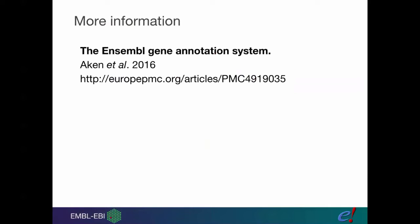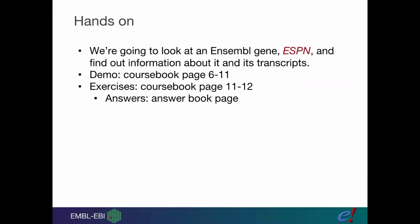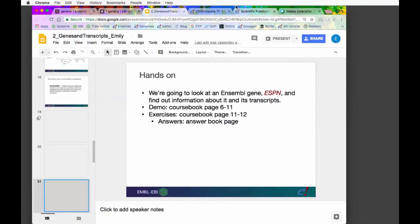We have a lot more information about the gene annotation system in our paper. The slides link to this, and I will also make sure it's available on the Train Online course. We're going to have a look at a gene called ESPN. We're going to find out more information about it and its transcripts. I'm going to hop out of my presentation here.